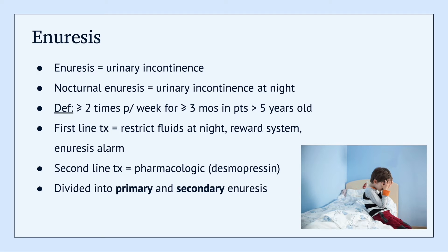When it comes to management, the first-line treatment is to restrict fluids at night, to incorporate a reward system, and to try an enuresis alarm. If these interventions aren't successful, the next step is to try pharmacological therapy. One of the main examples of this is desmopressin.